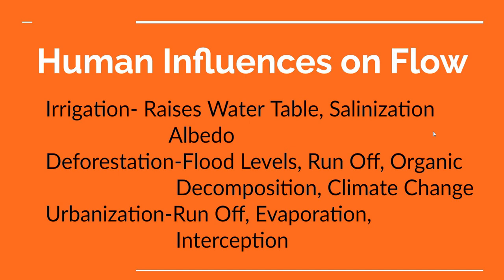Human influences are really significant on the flows involved in this hydrological cycle. Irrigation would be one of them — we're tapping into groundwater and aquifers and bringing that water up. When you see crops being irrigated in the fields, they're probably pumping water up out of the ground and spraying it on the plants. And if you take water up from the ground, there's a fair amount of salt in it, so you're spraying salt all over your crops — that's salinization, which could be a problem.